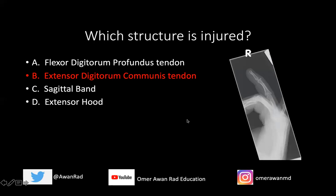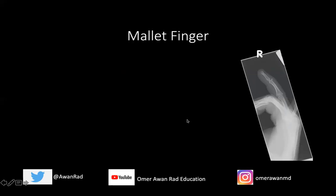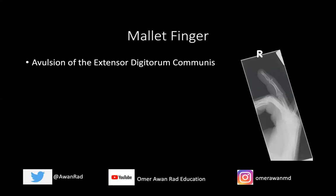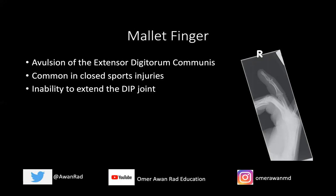So the best answer here is an avulsion of the extensor digitorum communis tendon, also known as a mallet finger, very common in baseball injuries. This is an avulsion of the extensor digitorum communis that inserts on the dorsal base of the distal phalanges of the digits. Often these patients present with inability to extend the DIP joint — they present with flexion and inability to extend the finger. However, if less than 80% of the tendon is torn, the extensor mechanism may still be preserved.